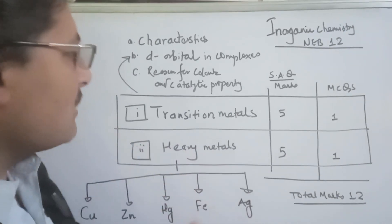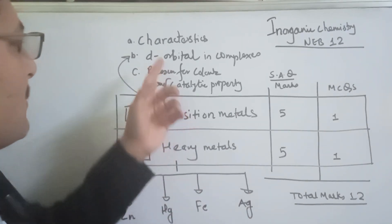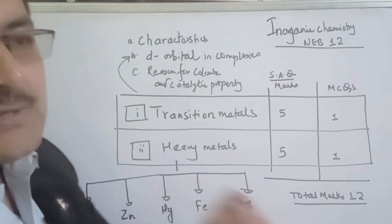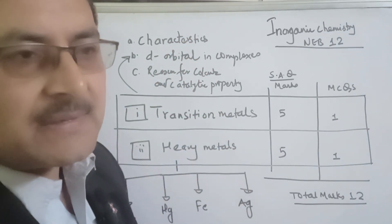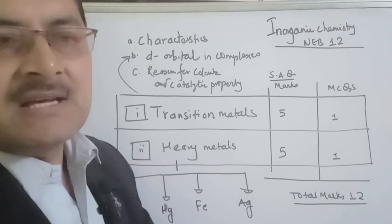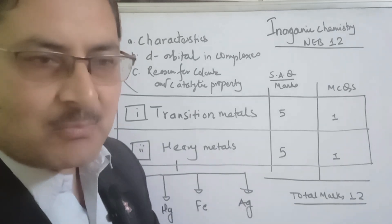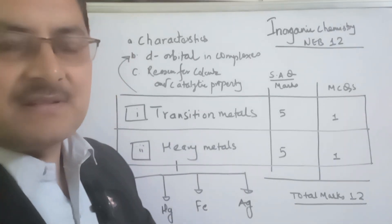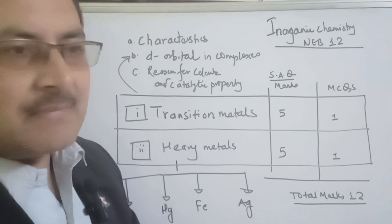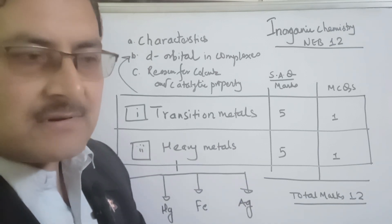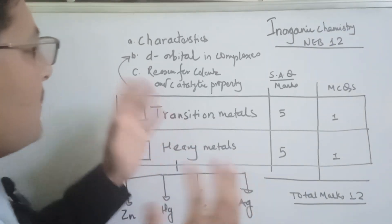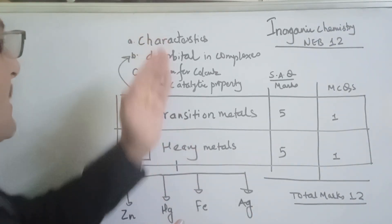Transition metals are D-block elements. There are some important characteristics of transition metals, which include variable oxidation state, color compounds, catalytic properties, magnetic behavior, and many more.